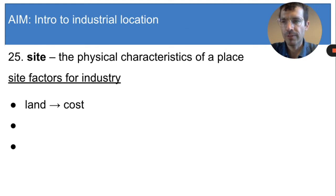But when we're talking about the site factors for industry, we mean three very specific things. The first site factor is land. For factory owners, the site factor of land really refers to the cost of land—how much does the land cost to buy? Factory owners want to save as much money as possible, so they would prefer to build their factories in places where land is cheap.